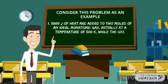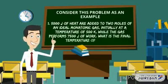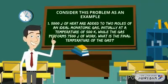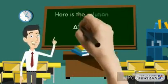5,000 joules of heat are added to 2 moles of an ideal monatomic gas initially at a temperature of 500 Kelvin. While the gas performs 7,500 joules of work, what is the final temperature of the gas? Here is the solution to the given problem.